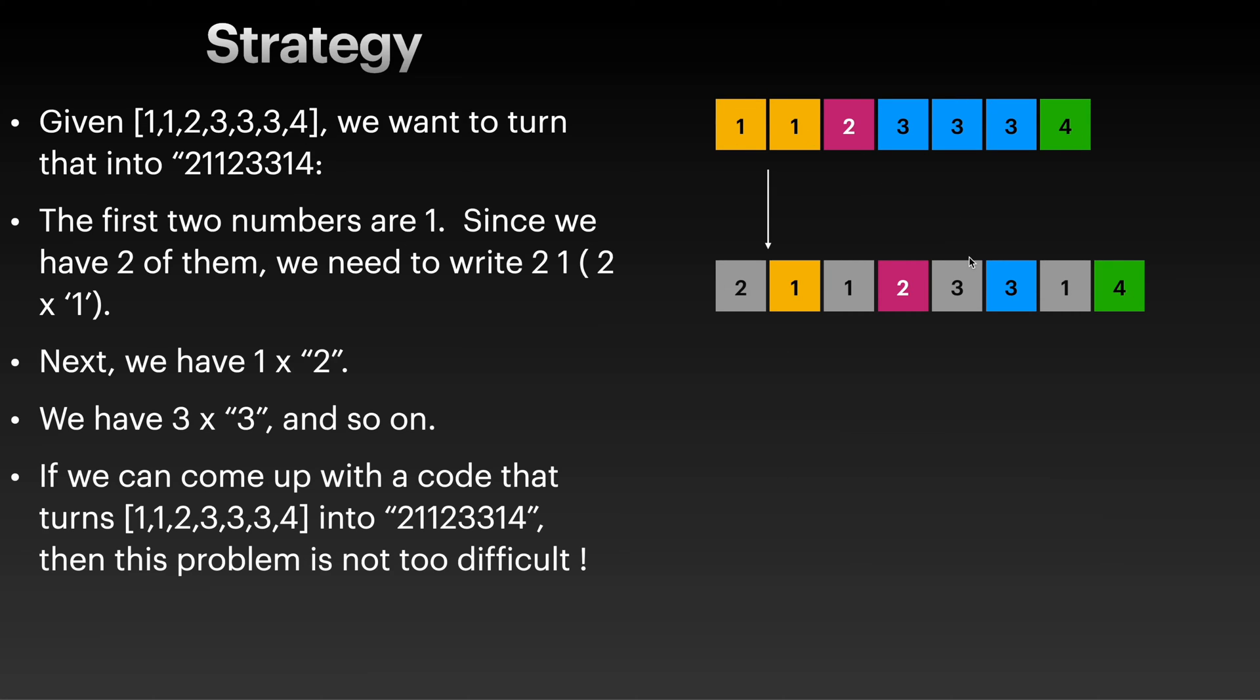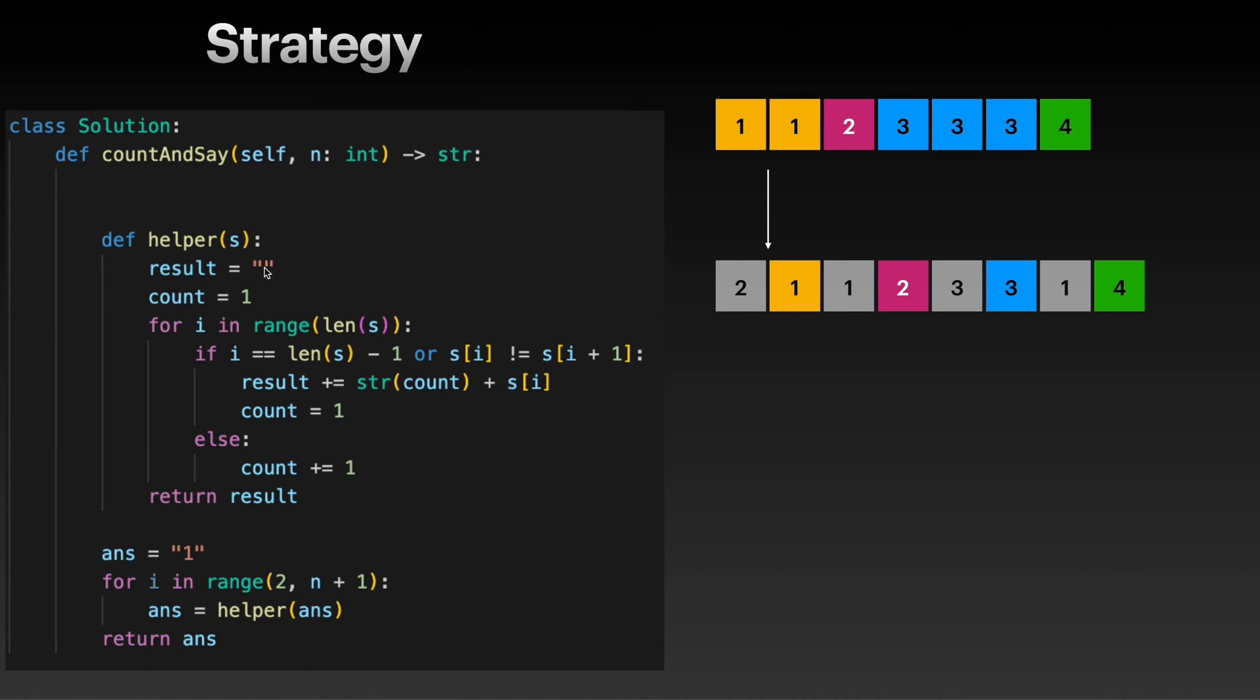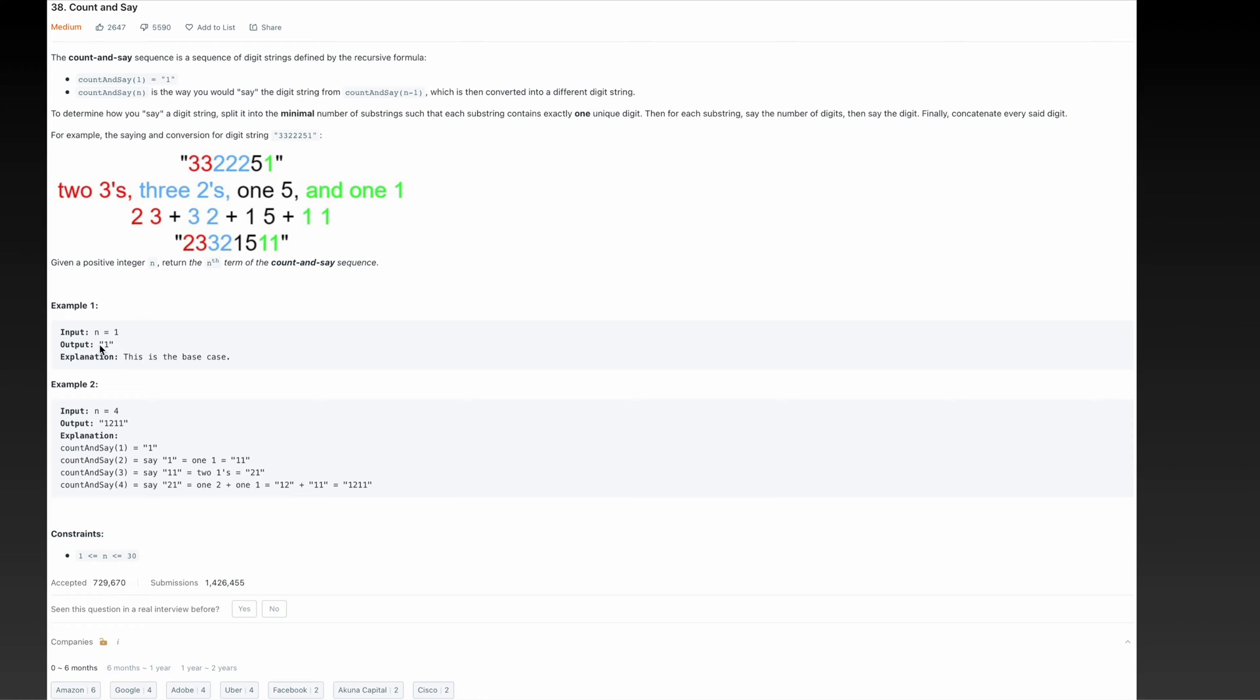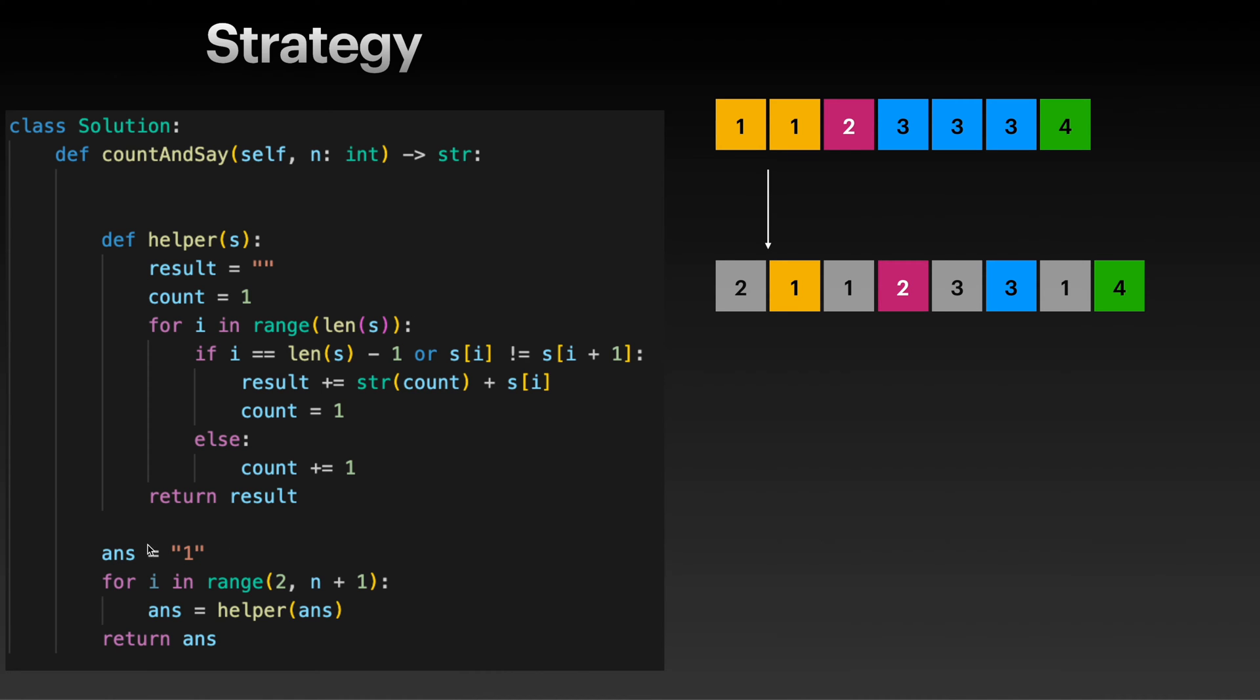So here is my code, this is my helper function. We basically have - remember here the base case is 1, so that's why I put this one here. And then n is given. So if we are given, say, n equals 5, then just don't forget that we have to have n plus 1.